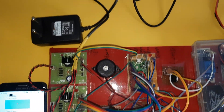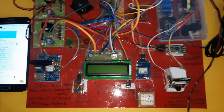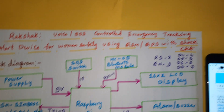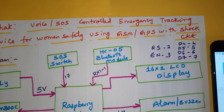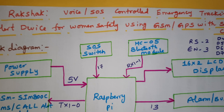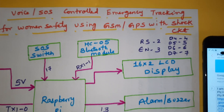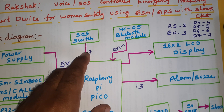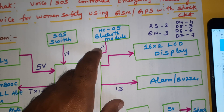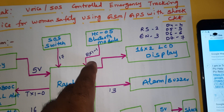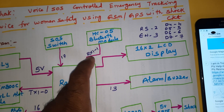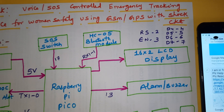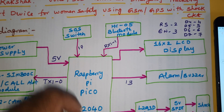Hi, we are from SVS Embedded. The project title is Rakshak - Voice and SOS Control, an emergency tracking and alert device for women's safety using GSM and GPS with a shock circuit. In this project we are using an SOS button as well as voice control. The voice controlled app is from the Google Play Store called Adrenal Blue Control.